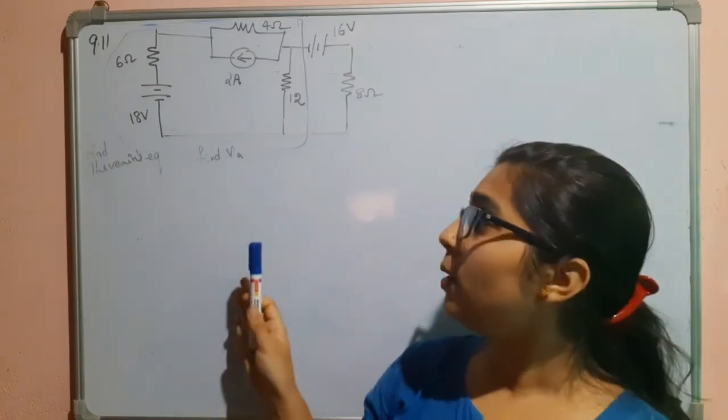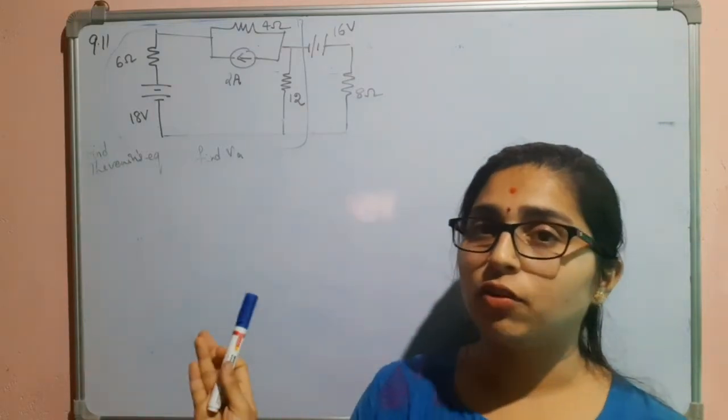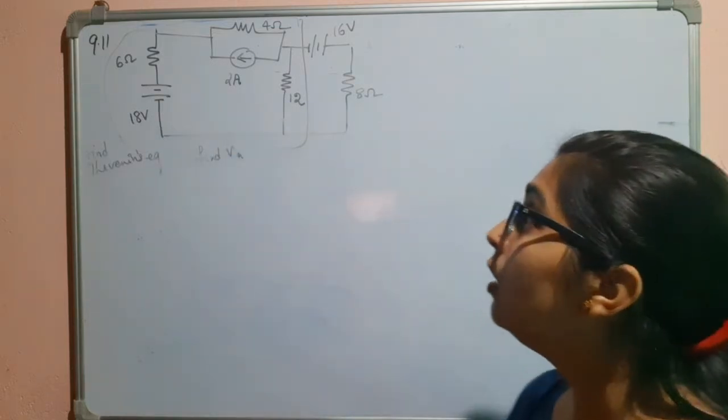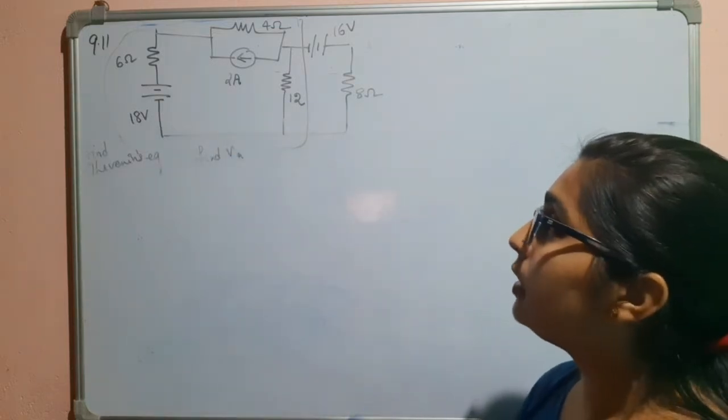Hello everyone, in this problem we have to find the Thevenin's equivalent for the portion which is given inside this box. So, let us see what this circuit contains.